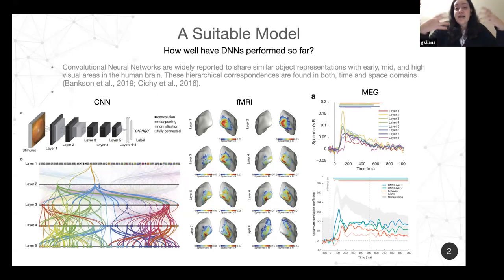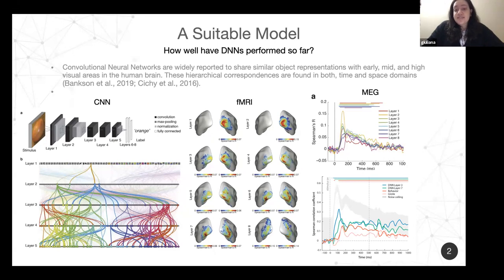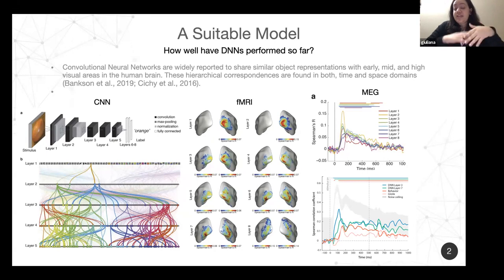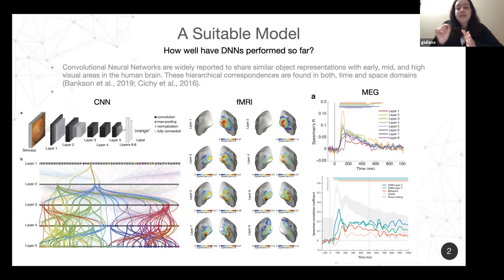You reach higher visual areas in the brain. We can also see this in time — with the MEG data, for the very first layers the peak of the correlation happens very early in time, and as you go to deeper layers, this peak shifts later in time.